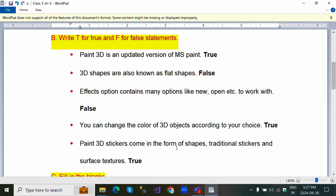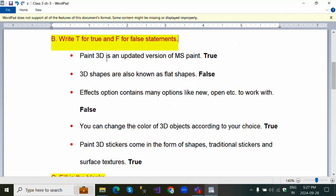Question B: Write T for true statement and F for false statements. Paint 3D is an updated version of MS Paint - this is true. 3D shapes are also known as flat shapes - this is false.